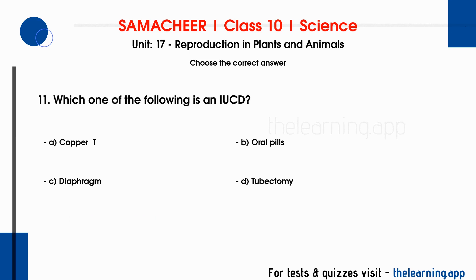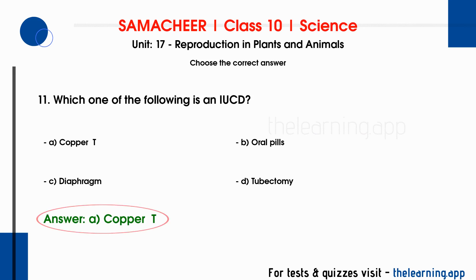Eleventh question: which one of the following is an IUCD? Options are A. Copper T, B. Oral pills, C. Diaphragm, D. Tubectomy. The correct answer is option A, Copper T. IUCD stands for Intrauterine Contraceptive Device.